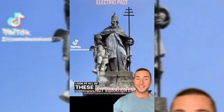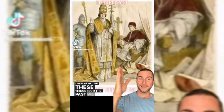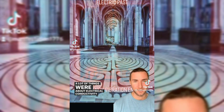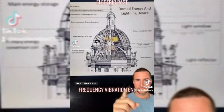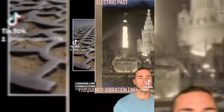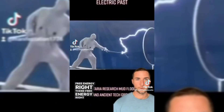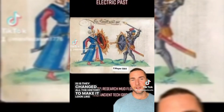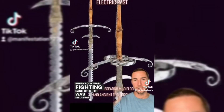When we look at all of these things from the past, a lot of things were about electrical conductivity — they all look like conductors. Sacred buildings look like conductors, they're built like conductors. There's free energy right there. But the thing is, they changed all the history to make it look like everybody was fighting each other, medieval people going against each other. In reality, I think the hidden history of the past is very different than what we've been taught.